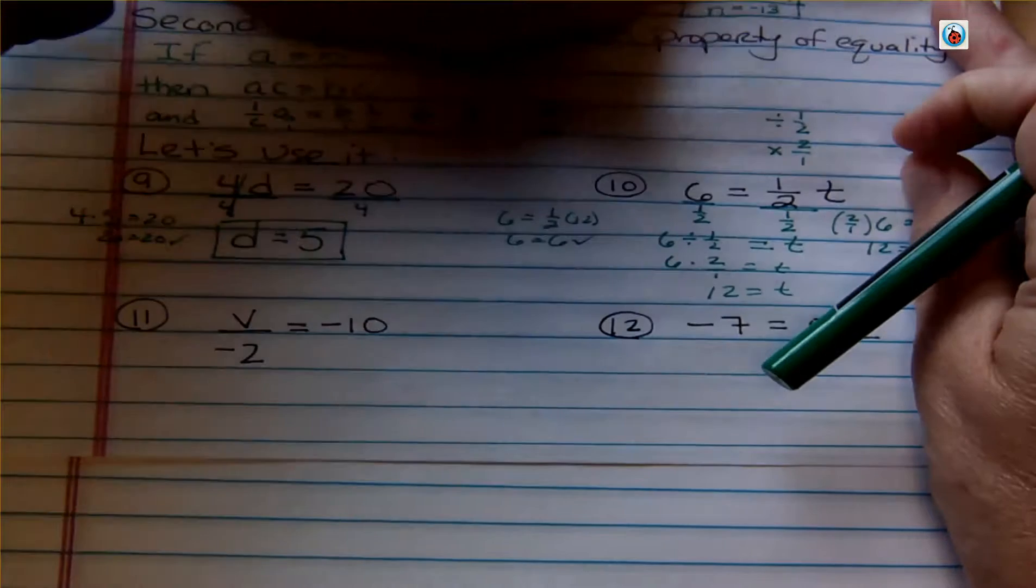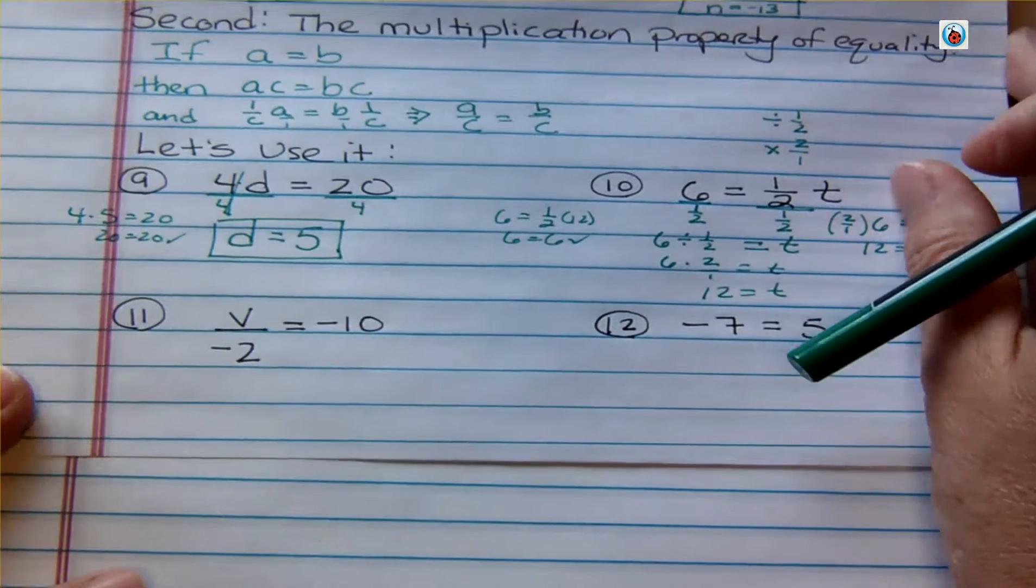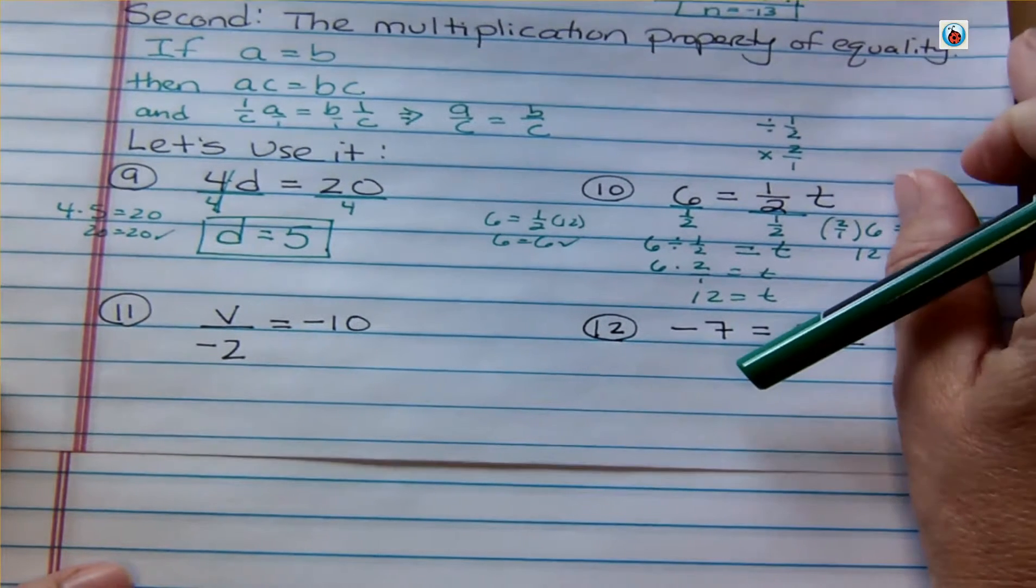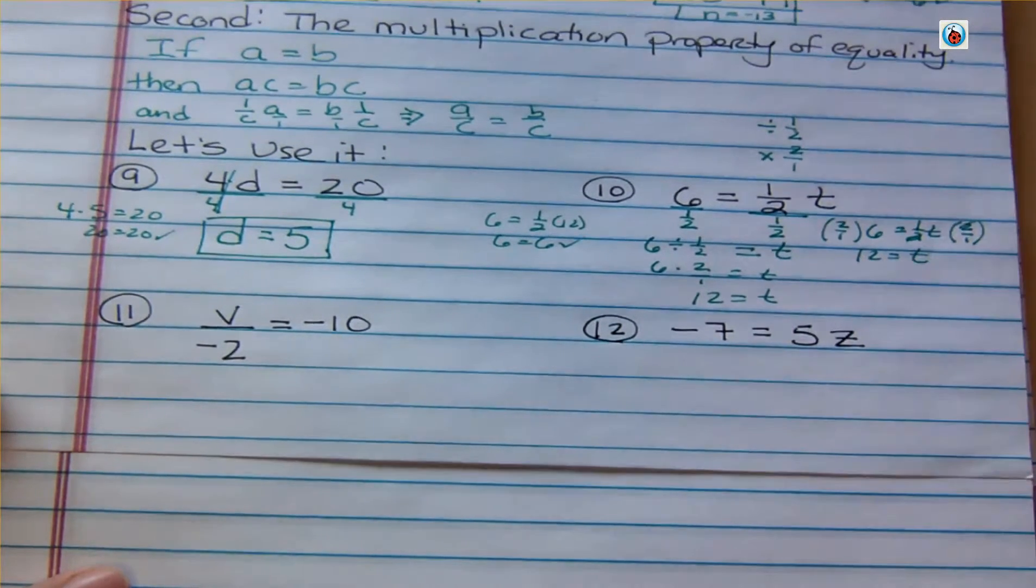Let's take a look at the last two that I have for you. And that is V over negative 2 is negative 10. And negative 7 equals 5Z.